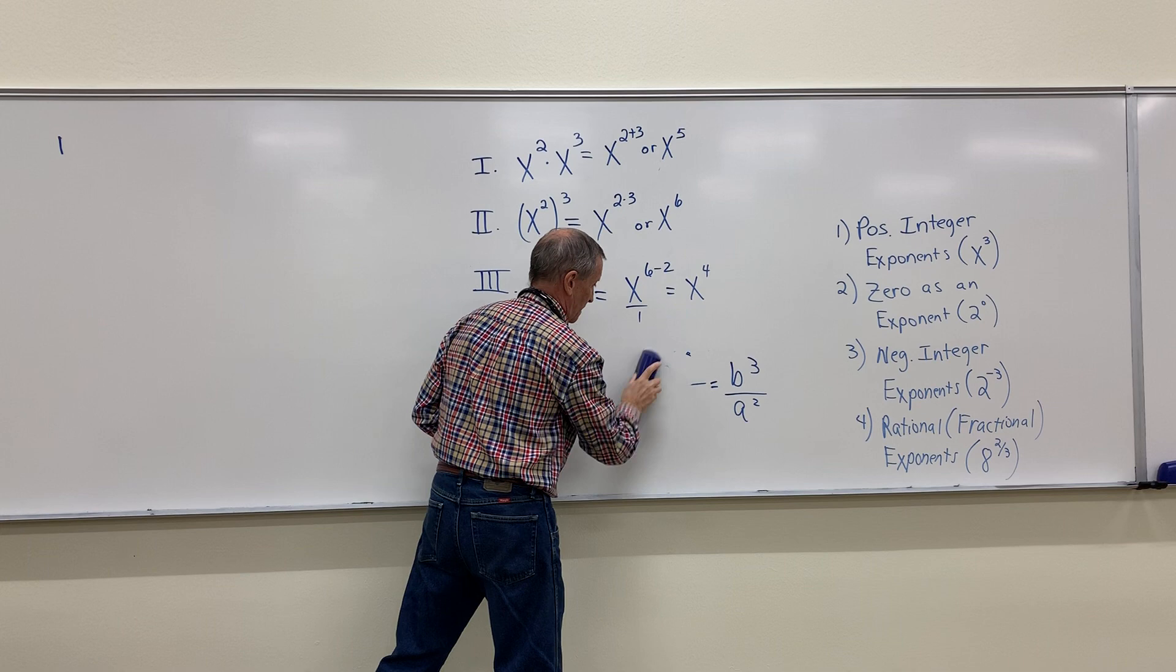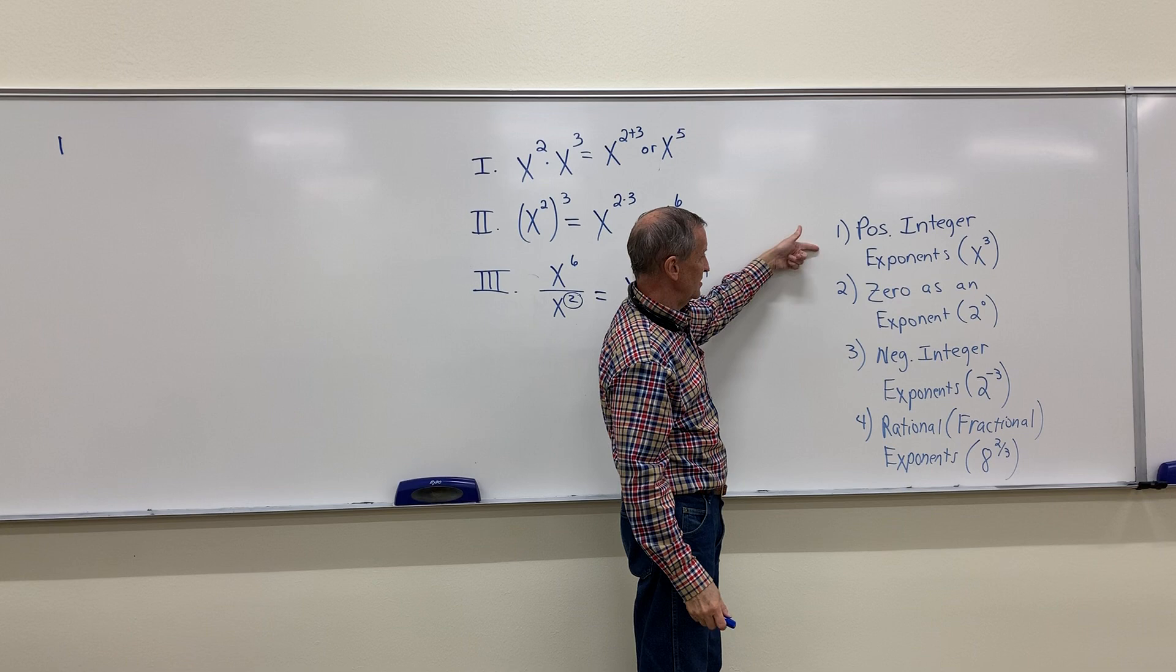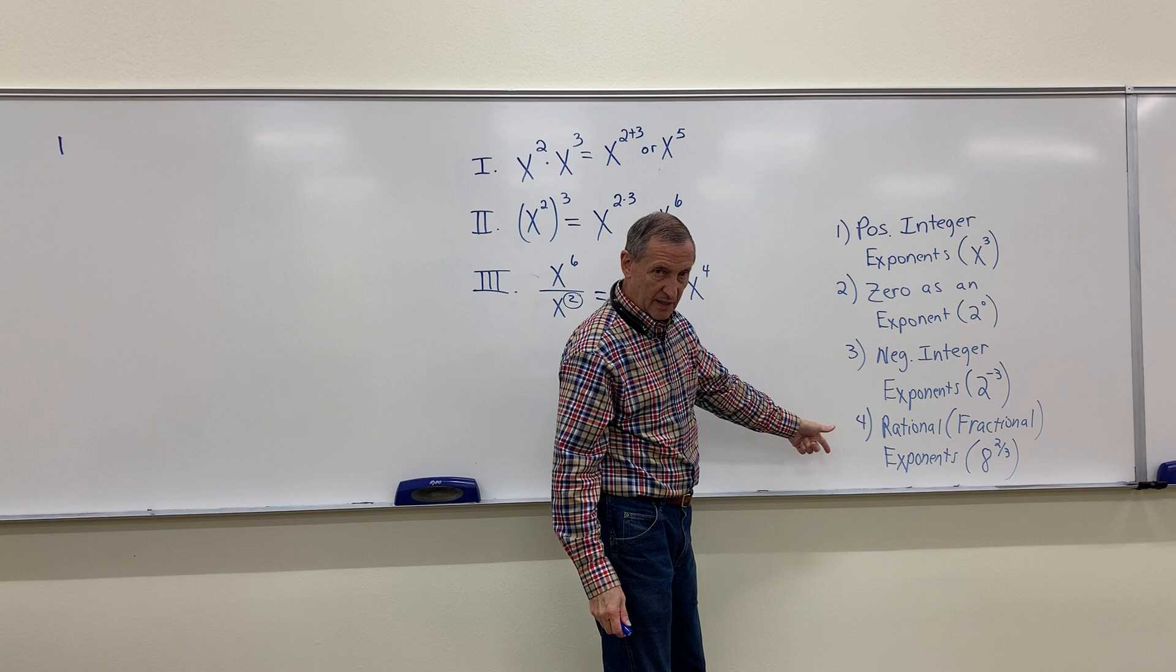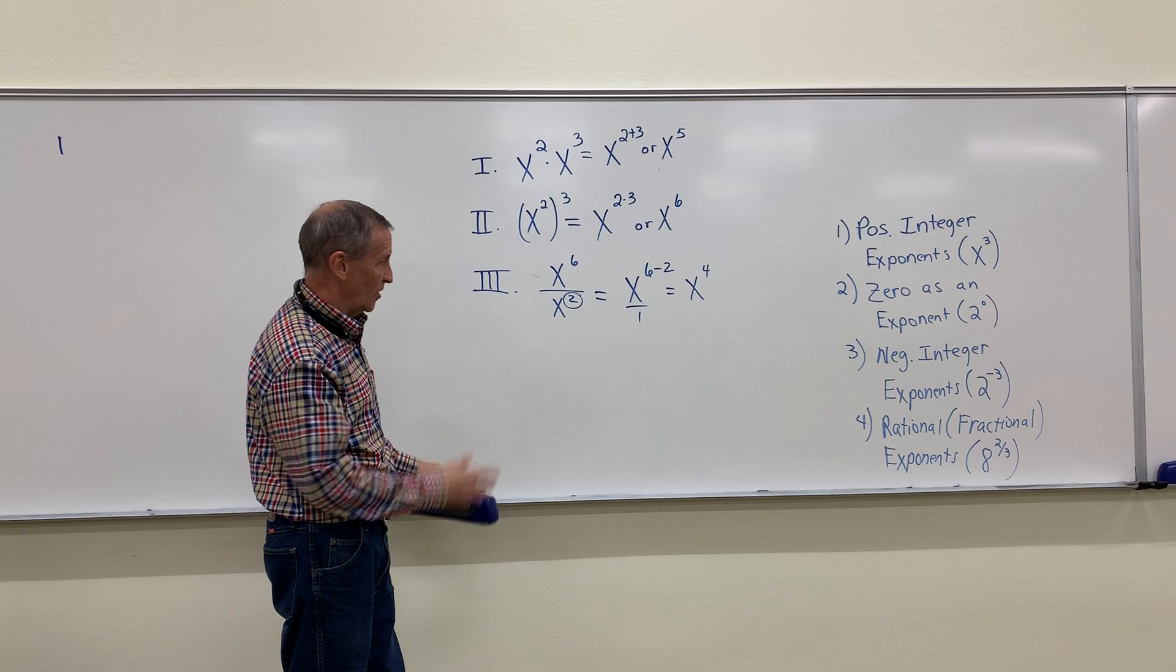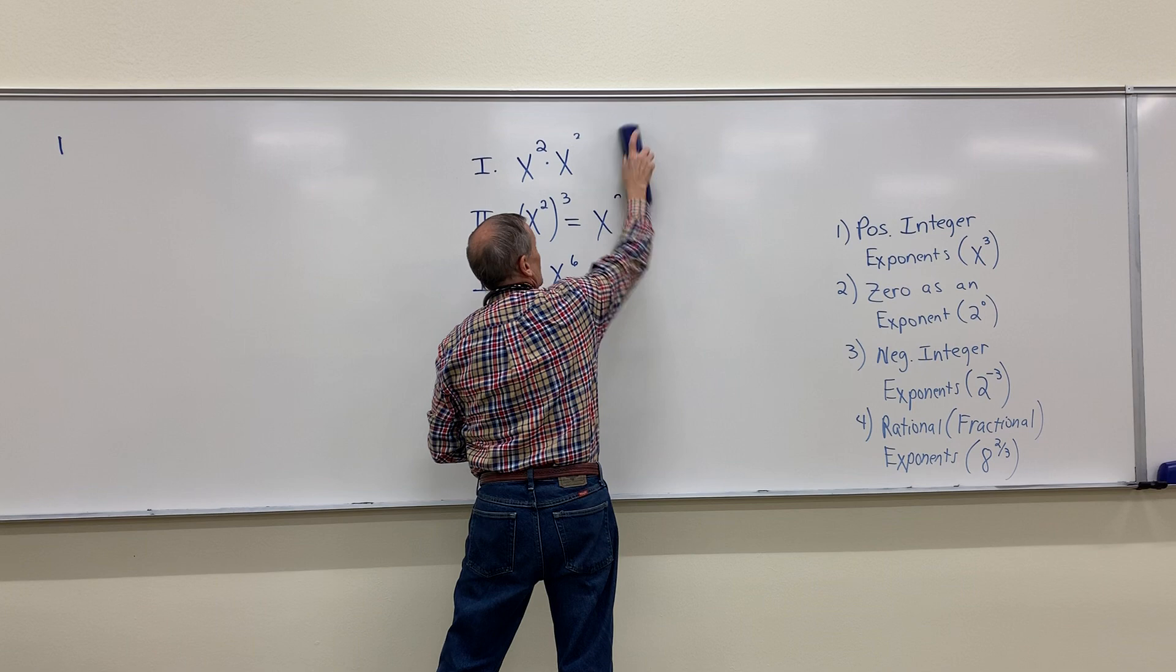That's my third property of exponents. It deals with a ratio, fraction. Now these properties of exponents apply to positive integers. Zero is a, I'm sorry, positive exponents. Zero is an exponent. Negative exponents. And a little bit later on to fraction exponents. These are consistent. They apply to all those instances. Well, we've talked about positive integer exponents. Let's look now at zero as an exponent.